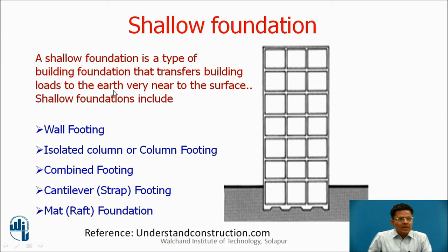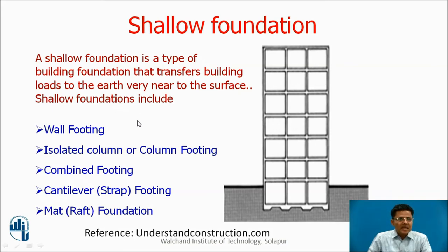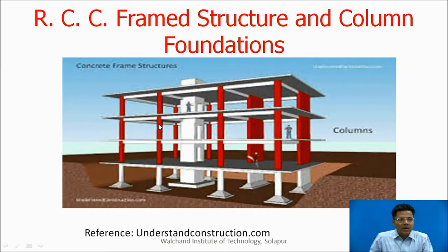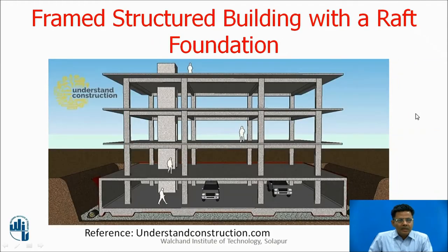A shallow foundation is a type of building foundation that transfers building loads to the earth very near to the surface. Shallow foundations include wall footings, isolated column footings, combined footings, cantilever strap footings, and mat or raft foundations. A typical shallow foundation is provided for an RCC frame structure — the columns are provided with footings at shallow depths, hence called shallow footings. Isolated footings are provided for individual columns. Where a frame structure is built on weak strata, a raft foundation is provided.